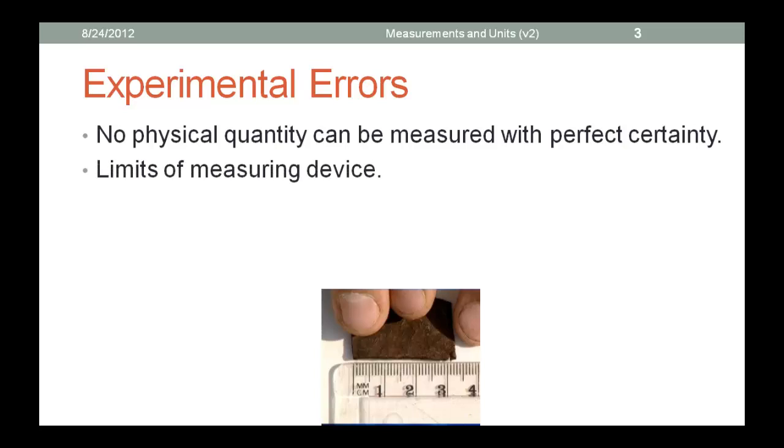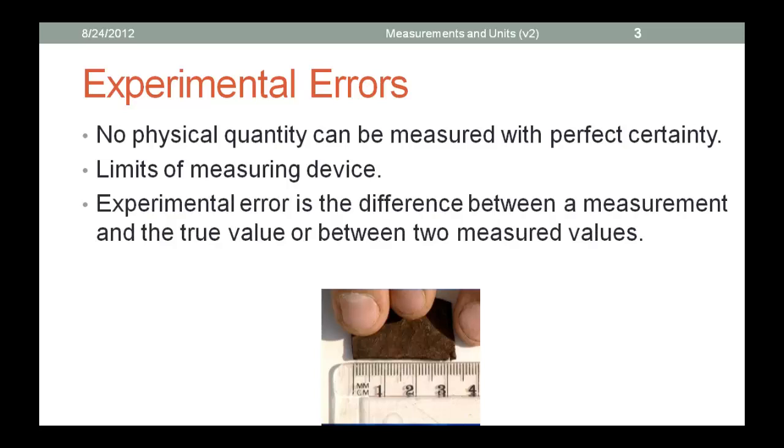Devices that we use to measure our objects with have a limit. This is one cause of the error. This is why we cannot measure a physical quantity with perfect certainty. Devices that we use to measure our objects with have a limit. Look at this ruler. It measures to the millimeter.